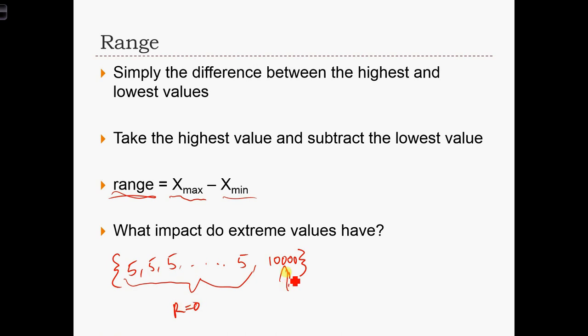But if we include just one extreme value in our data set, that's going to increase our range to 9,995. So we see that there's an extreme impact, or the impact of one extreme value is very, very strong with the range.